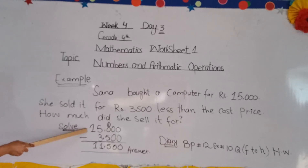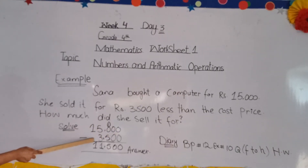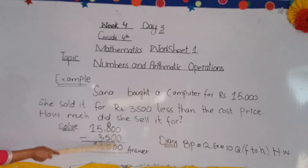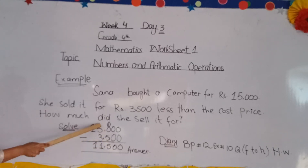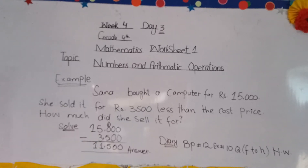15,000 is bigger than 3,500, so we write down the bigger amount: 15,000, and below that 3,500. 0 minus 0 is 0, 0 minus 0 is 0. Then 10 over 5 is equal to 5. The remaining amount: 4 minus 3 is equal to 1. So we write 1 below.